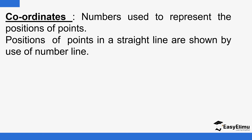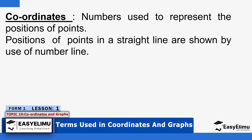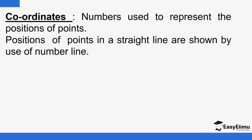So we have the following terms which are used in coordinates and graphs. The first term we're going to look at is called a coordinate. When there is one, we talk about a coordinate; when there are many, we talk about coordinates. So what are coordinates? These are numbers that are used to represent the positions of points. The positions of points in a straight line can be illustrated by use of a number line.